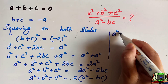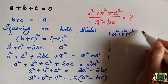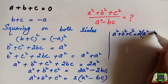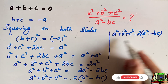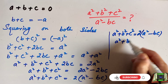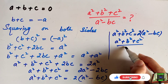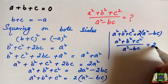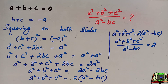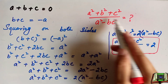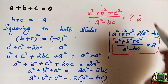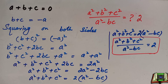We are left with a² plus b² plus c² on the left, and 2 times (a² minus bc) on the right. Moving a² minus bc to the other side — since it is multiplied, on the other side it will be divided — we get a² plus b² plus c² divided by a² minus bc, which equals 2. This is the required answer. I hope you understood this and found it easy. Till the next video, keep watching.